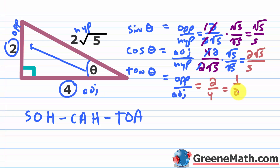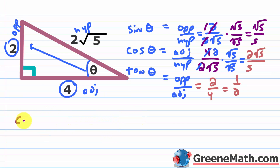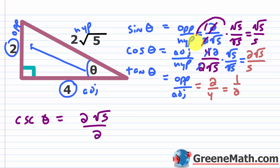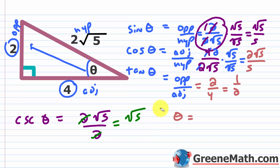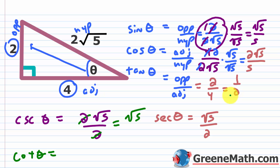Now flip these to get the remaining three. For cosecant of theta, flip sine before rationalizing: 2√5 over 2 simplifies to √5. For secant of theta, flip cosine (before rationalizing): that gives √5 over 2. For cotangent of theta, flip the tangent of 1/2 to get 2.